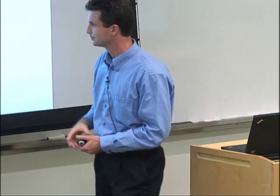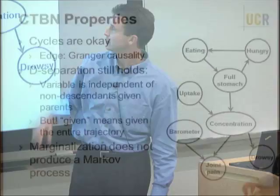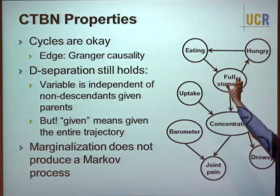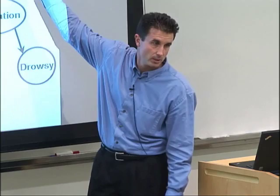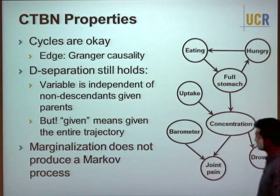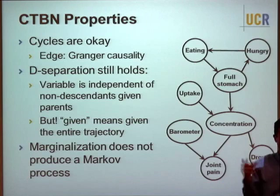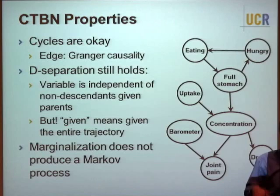A classic example: whether or not I'm eating affects whether my stomach is full, which affects whether I'm hungry, which affects whether I'm eating — cycles are okay in a CTBN. Edges have a causal interpretation (at minimum, Granger causality). D-separation still holds: a variable is independent of its non-descendants given its parents.